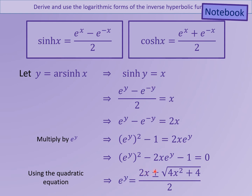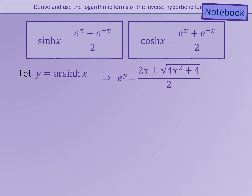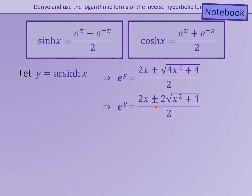So here we have minus b plus or minus the square root of b squared minus 4ac, all over 2a. In this case, a is 1, b is negative 2x, and c is negative 1. We're going to simplify this a little further, factorising out a 4 from the expression 4x squared plus 4, and then bringing it outside of the square root so that it becomes 2. This gives us 2 times the square root of x squared plus 1 for this part. We can now divide everything by 2, to give us e to the y equals x plus or minus the square root of x squared plus 1.